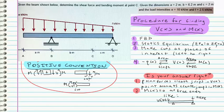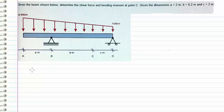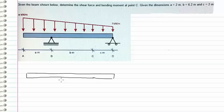Whenever you make cuts, you're going to follow this sign convention, where your shear force is going down on the right and your bending moment is creating a right-hand positive. On the left, it's the opposite. Here are some examples of the cuts — these squiggly lines are the cuts. So let's follow the steps and start creating our free body diagram, just drawing the beam.